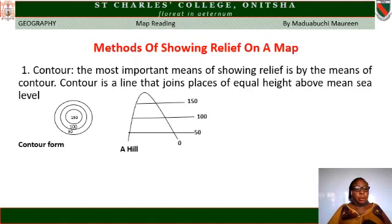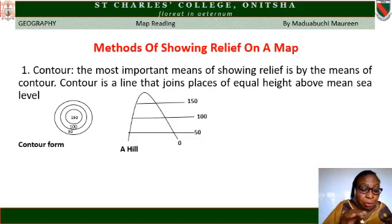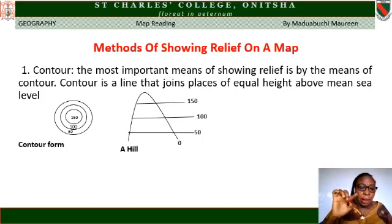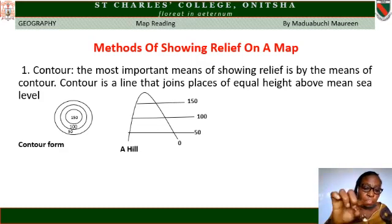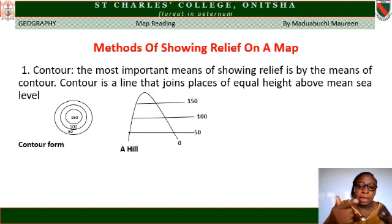Methods of showing relief on a map. First: contour. The most important means of showing relief is by contour. A contour is a line that joins places of equal height above sea level. From the contour form on the screen, we have heights of 50, 100, and 150. Anything above the 50 line is above 50 but not up to 100. Anything above 100 is above 100. Then the third line — anything above 150 is above 150. Looking at the real diagram of the hill, you have 0, 50, 100, and 150. The hill is not up to 200.